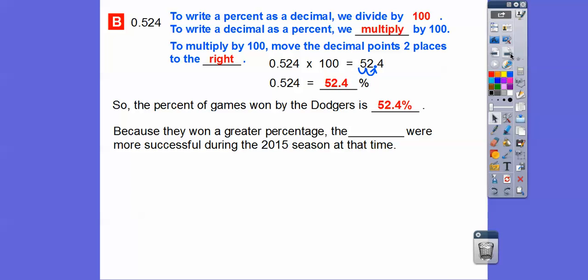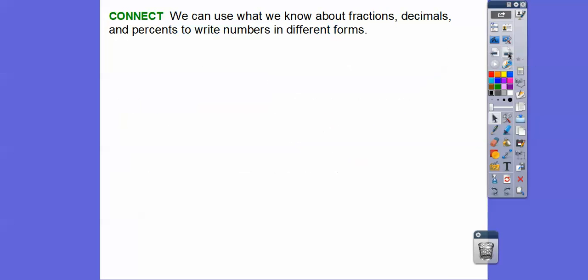Let's answer the question now. Because they won a greater percentage, remember the Giants won 55%, so because they won a greater percent, the Giants were more successful during the 2015 season at that time. So they play 182 games, so if they've only played 20, they've got a lot of season left.